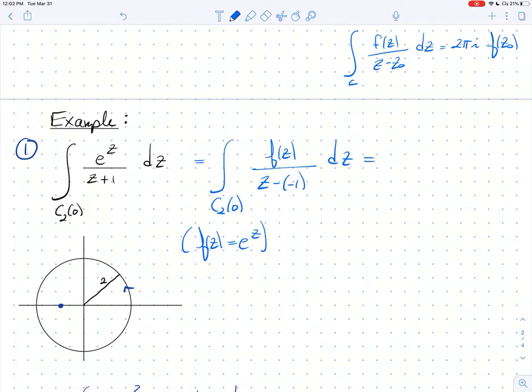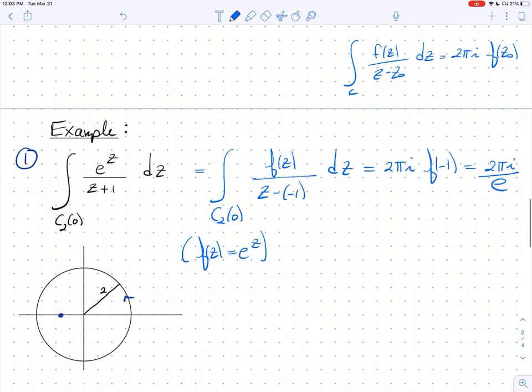Everything is clear. My circle here has positive orientation. I'm assuming that my function f is analytic everywhere, let alone inside and on C. This z naught lives inside C, so this is exactly 2πi times f of negative 1, which is just 2πi over e. That's a first example of how one can go about using Cauchy's integral formula.